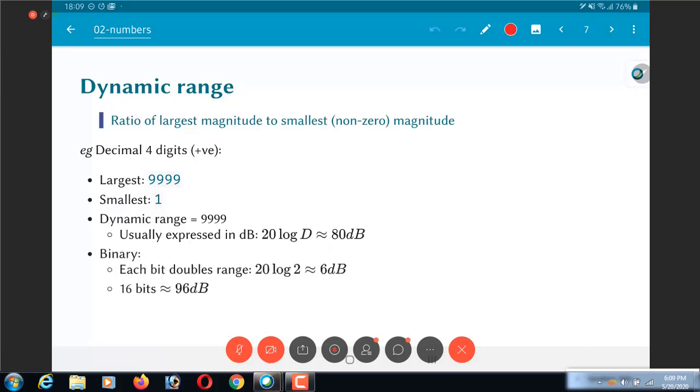Now we could compute this dynamic range in exactly the same way for binary as well. In binary, let's say I have 5 bit numbers, 5 bit positive numbers. Then the largest value that I can have is 11111. Remember I said positive, this is not 2's complement, only positive numbers are allowed, which means that this is 31. Smallest is going to be 1.